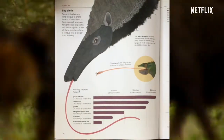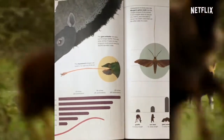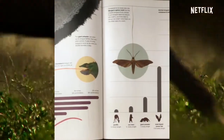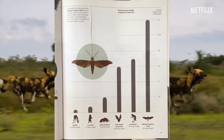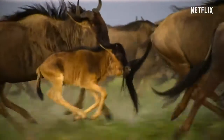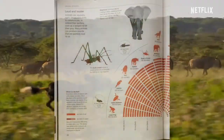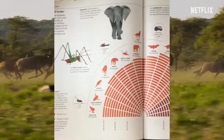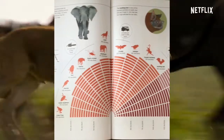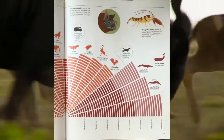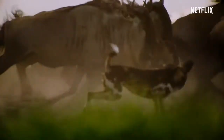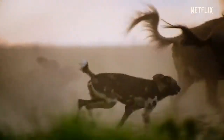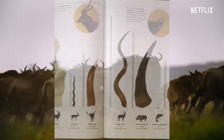What surprises you about the animals? How do the displays help you see new things? How do the proportions change your thoughts about comparisons? What do you wonder now? Where do you think you would fit on the graphs? What connections do you see across the graphs?